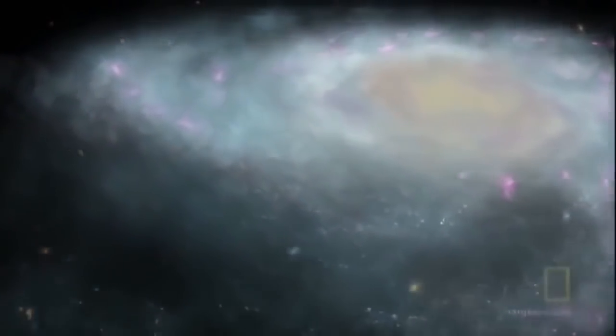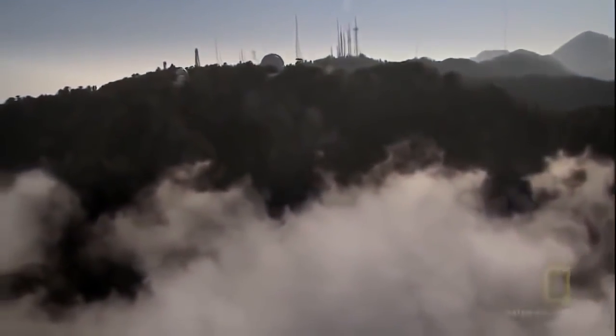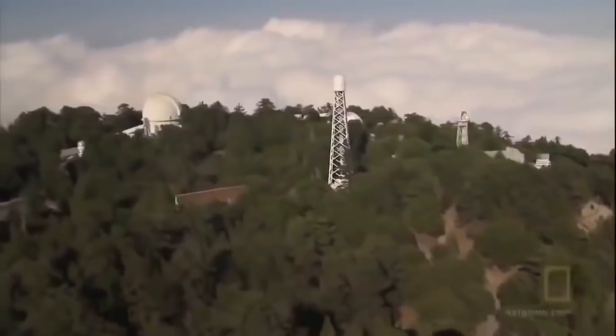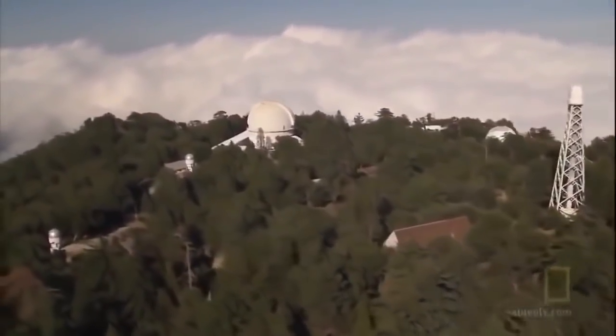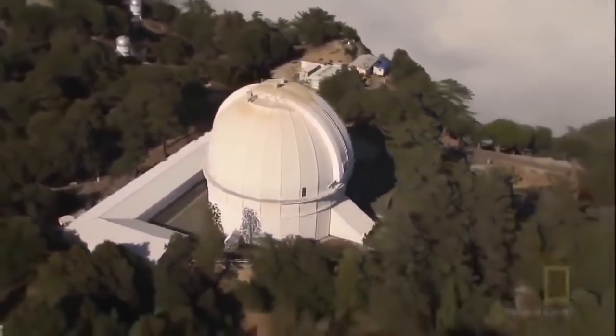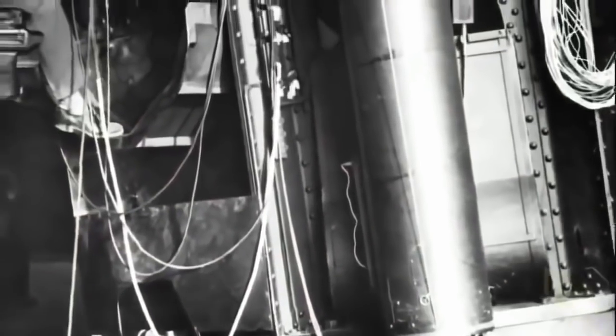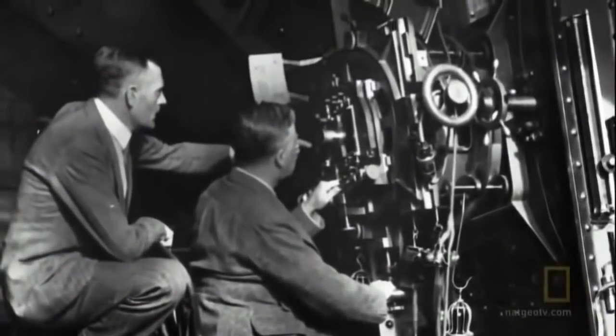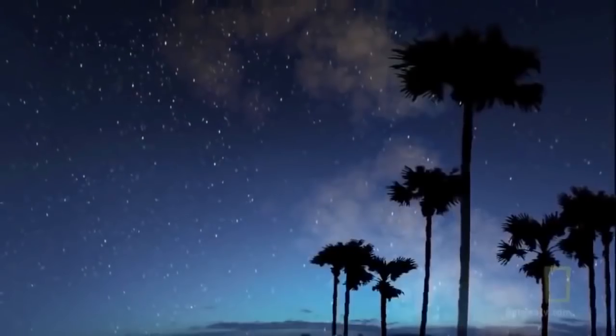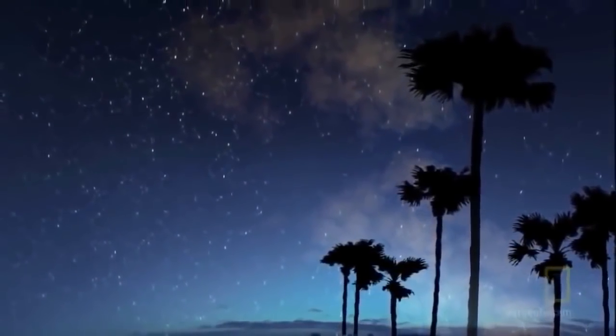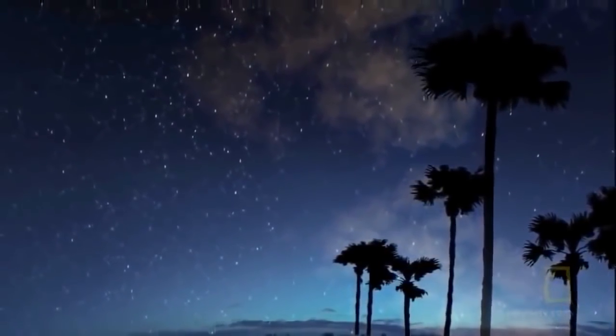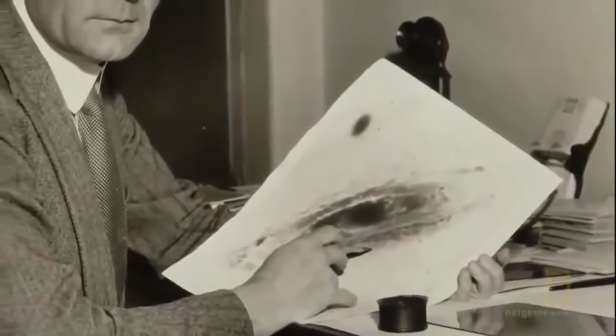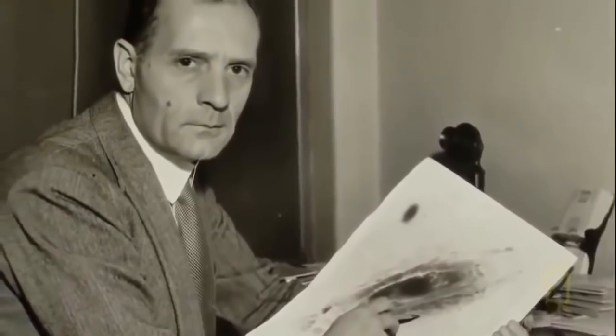However the end comes, it will be a dramatic conclusion. To understand how it all could end, scientists turn to how it began. The mystery starts to be solved here at the Mount Wilson Observatory overlooking Pasadena, California. In 1929, while looking through what was then the world's largest telescope, Edwin Hubble makes a strange discovery: the universe is expanding.